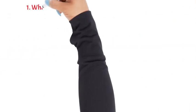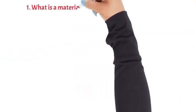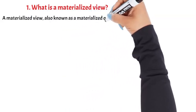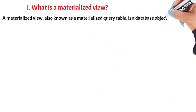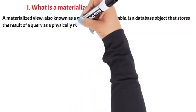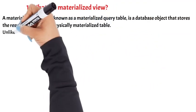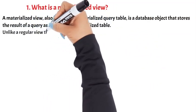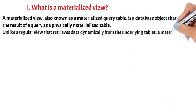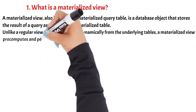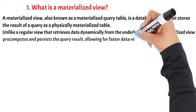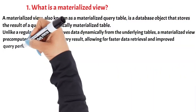Question 1: What is a Materialized View? A materialized view, also known as a materialized query table, is a database object that stores the result of a query as a physically materialized table. Unlike a regular view that retrieves data dynamically from the underlying tables, a materialized view pre-computes and persists the query result, allowing for faster data retrieval and improved query performance.